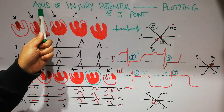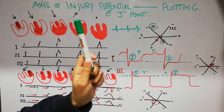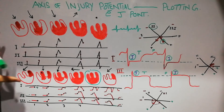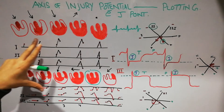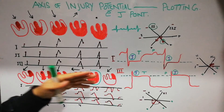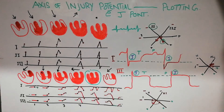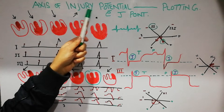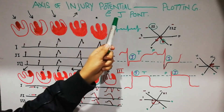Today we are going to discuss the axis of injury potential and its plotting with the help of J point. This lecture is in continuation with our previous lectures on current of injury. We have previously discussed the current of injury, the plotting of the normal cardiac vector, and the plotting of the vector for the current of injury. We have also discussed J point and zero reference line. Today we will discuss the calculation of voltage of injury potential and the plotting of the axis for injury potential with the help of J point.